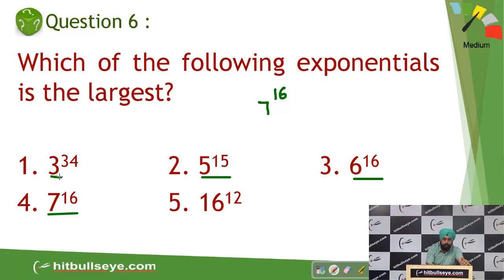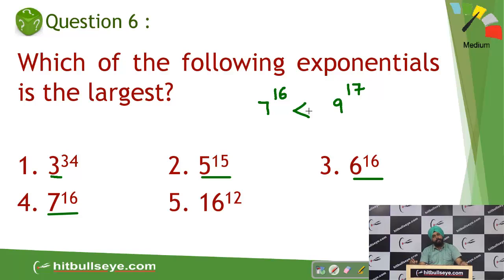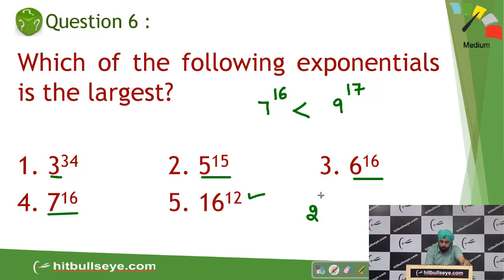Can you write 3 raised to power 34 as 9 raised to power 17? Applying the same logic, the base and power are both higher, so 9 raised to power 17 is greater than 7 raised to power 16. Now you only need to compare 9 raised to power 17 with 16 raised to power 12. Can you write 16 raised to power 12 as 2 raised to power 4 raised to power 12?